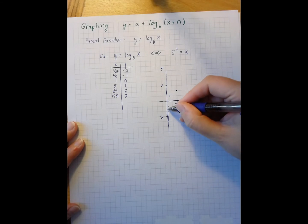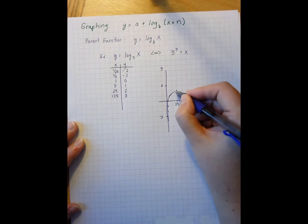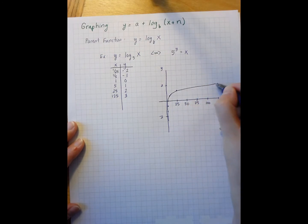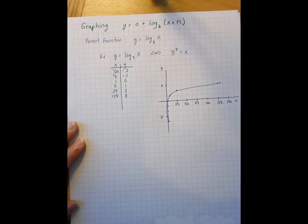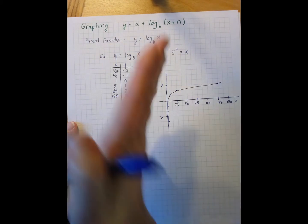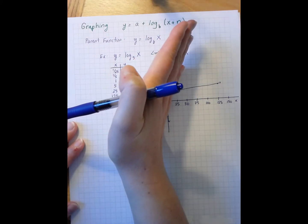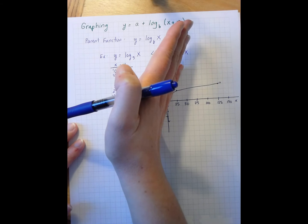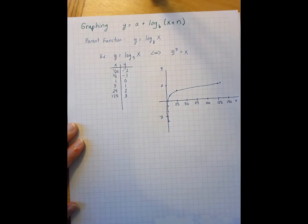So I'm getting this sort of shape, which makes sense since logarithms are the inverses of exponents. We see this exponential type function, but it's flipped — reflected along the y equals x axis, which should make perfect sense given the fact that they're inverses and inverse functions are reflected over the y equals x line.